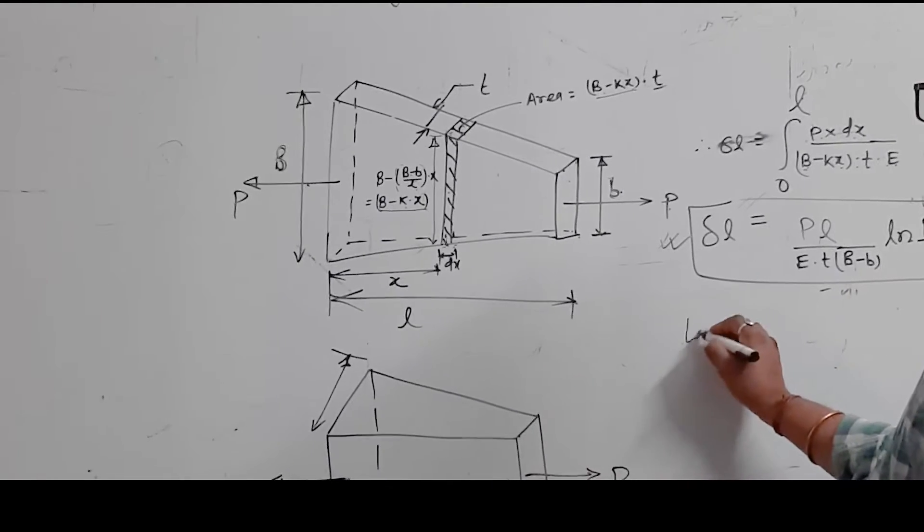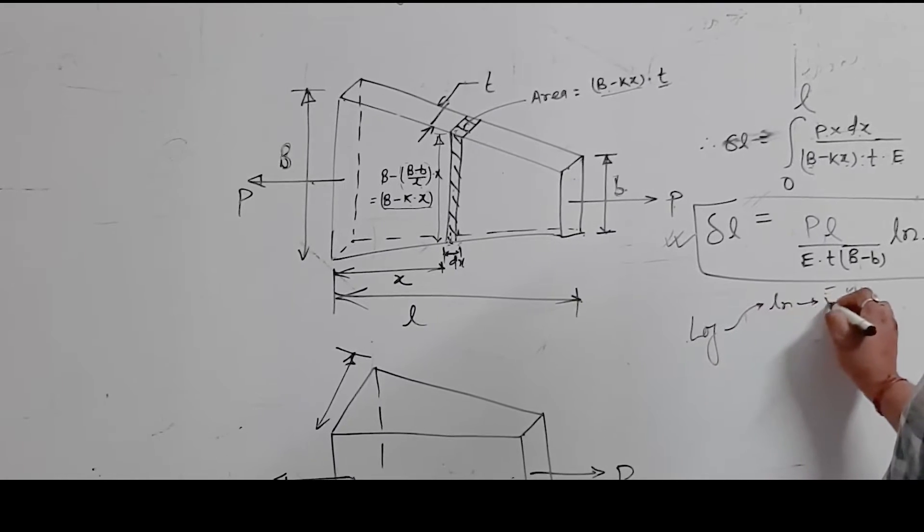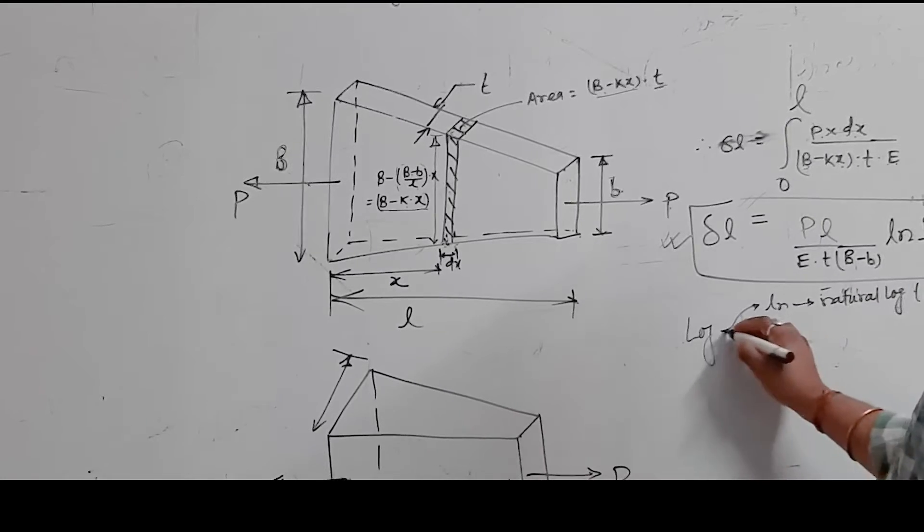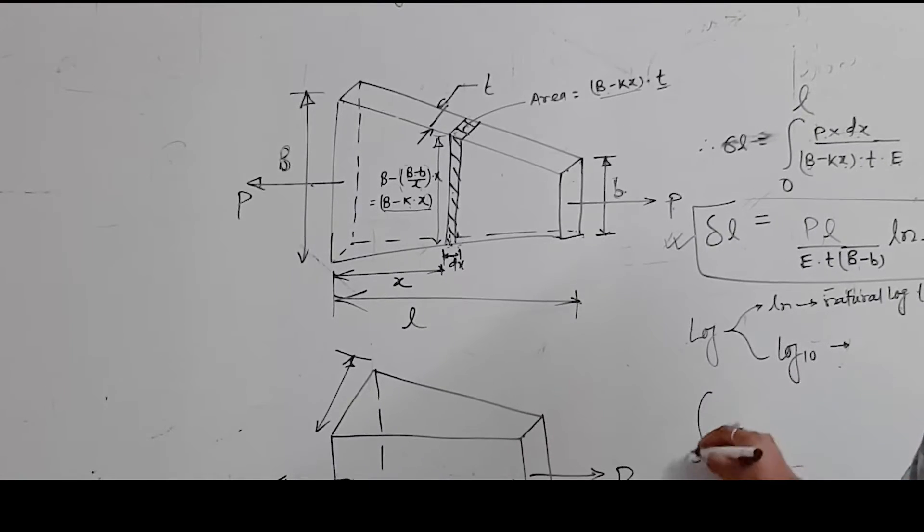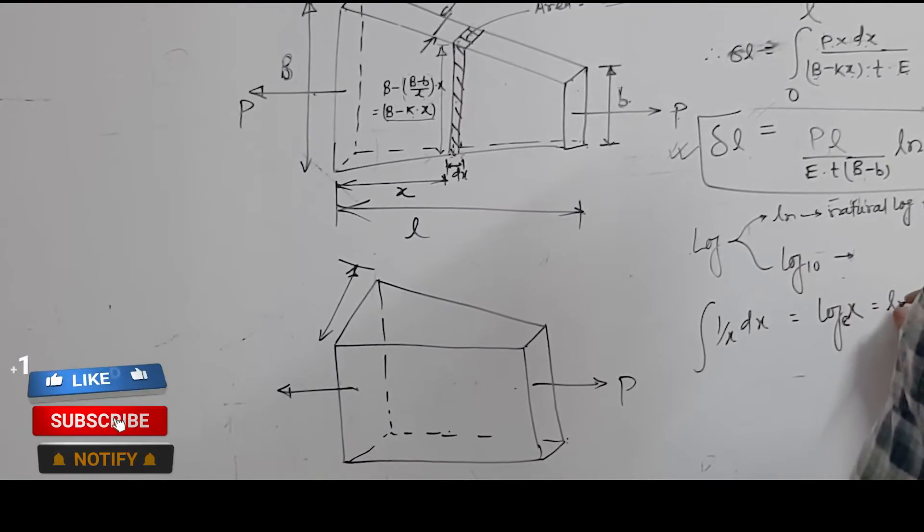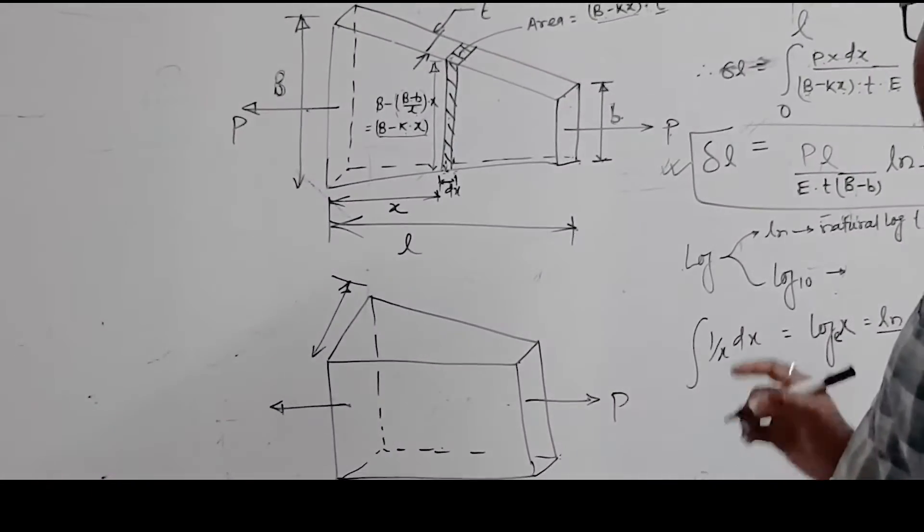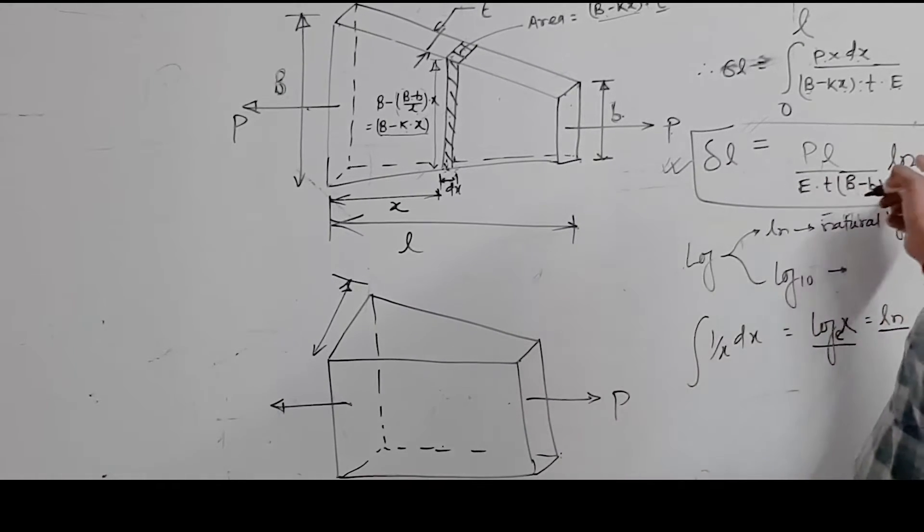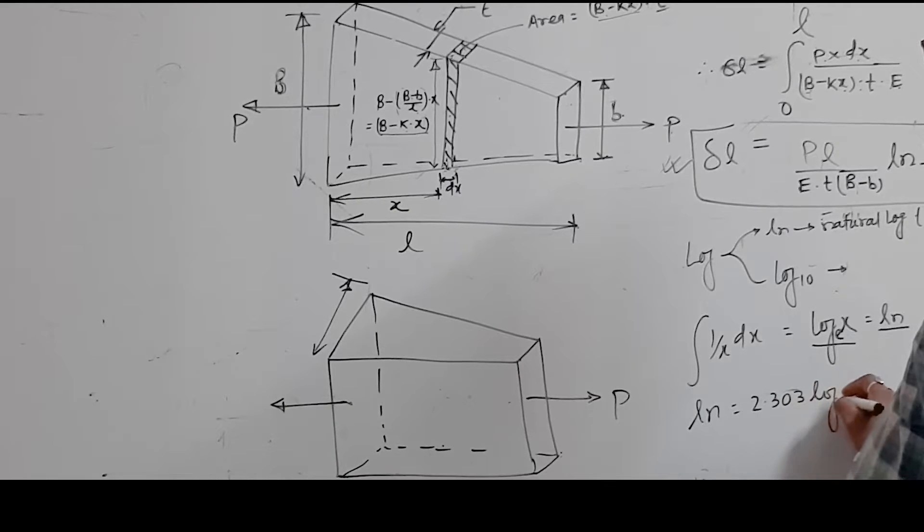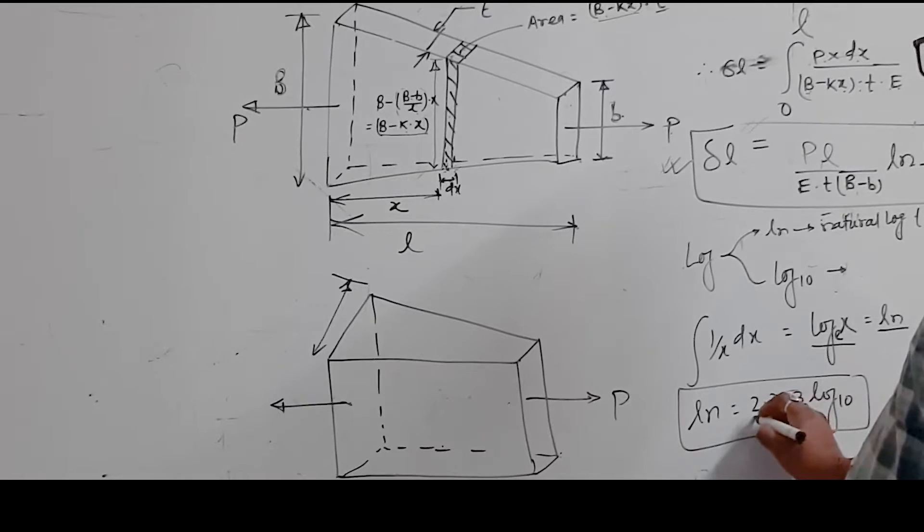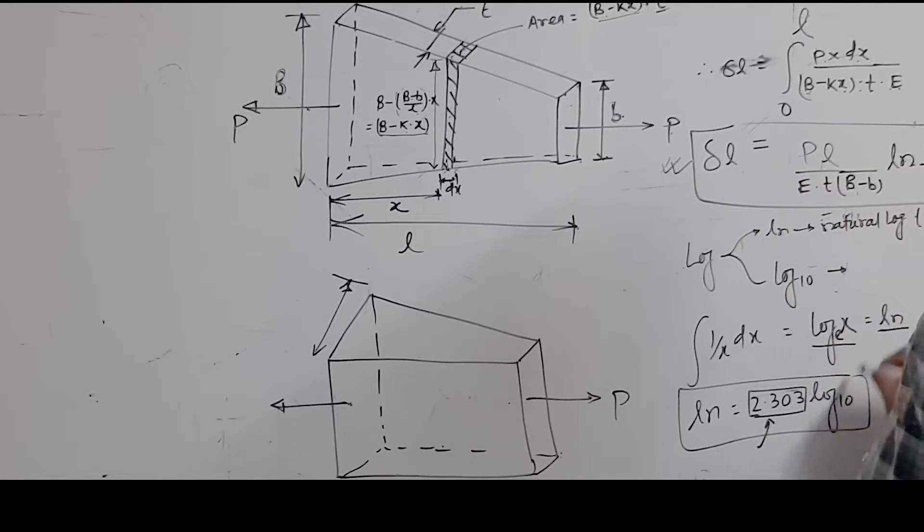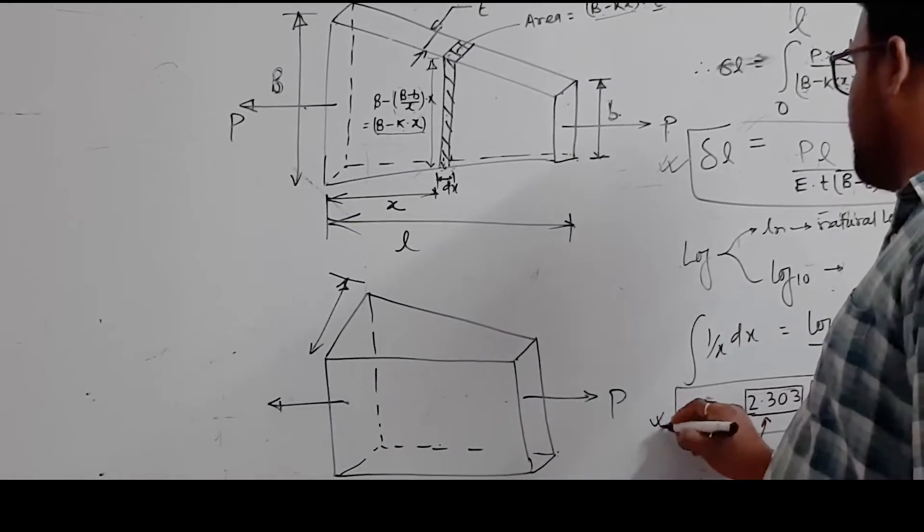Dear students, you need to understand that ln is called natural log, which is log base e. Some call it log E. Regular log is log base 10. The integration of 1 by x dx gives log x, which is natural log. Also understand that ln multiplied by 0.102 equals log base 10.